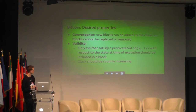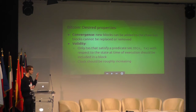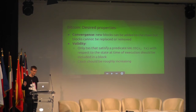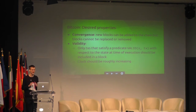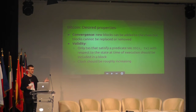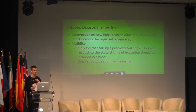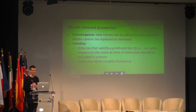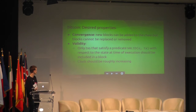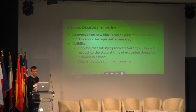Validity means that only transactions that satisfy a certain predicate — valid with respect to the state at the time of execution — should be included in a block. For example, if I have 490 Bitcoins and send 400 to Mihai, that transaction is valid with respect to the current state. But after execution, I have 90 Bitcoins left, so a similar transaction sending 400 Bitcoins should not be allowed a second time. With respect to the clock, the clock should be roughly increasing and should also reflect reality.